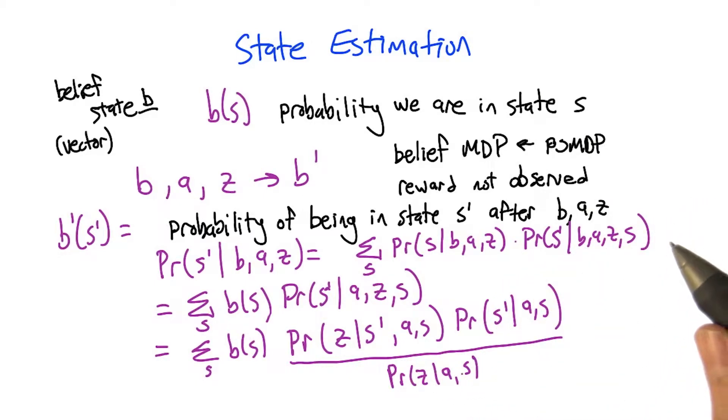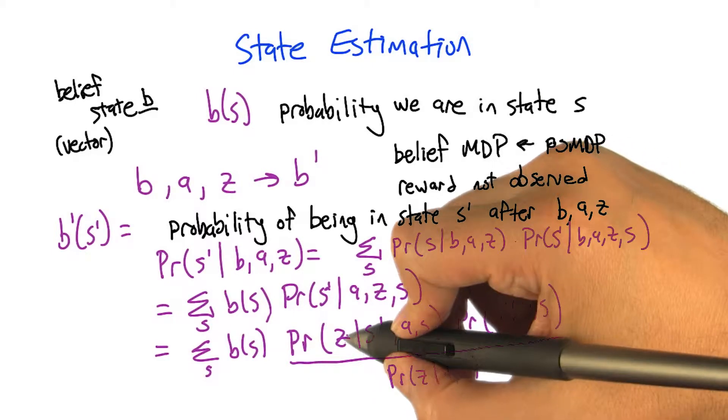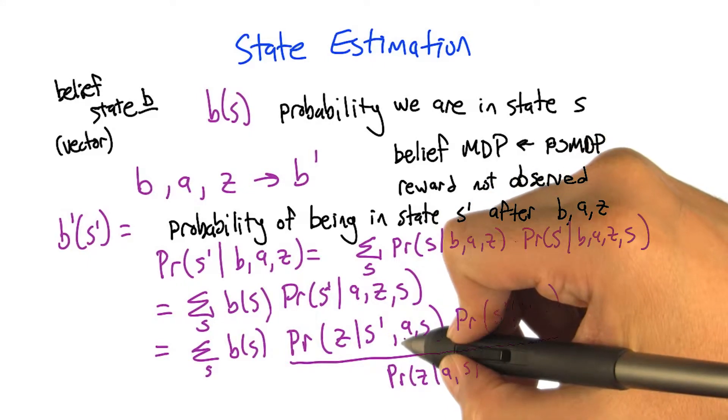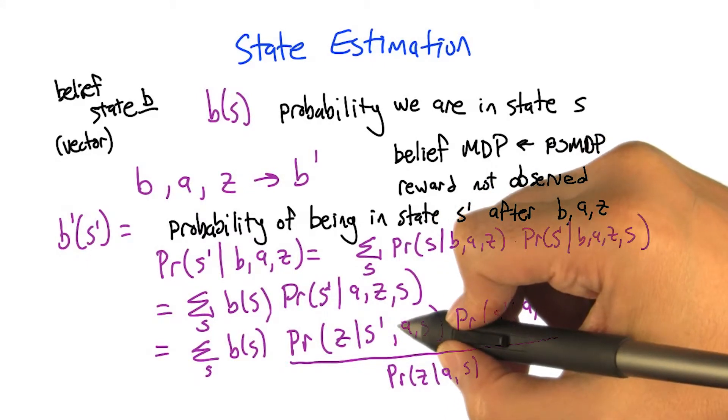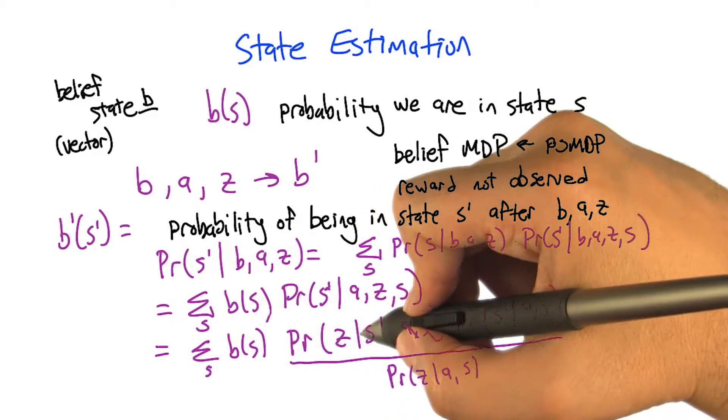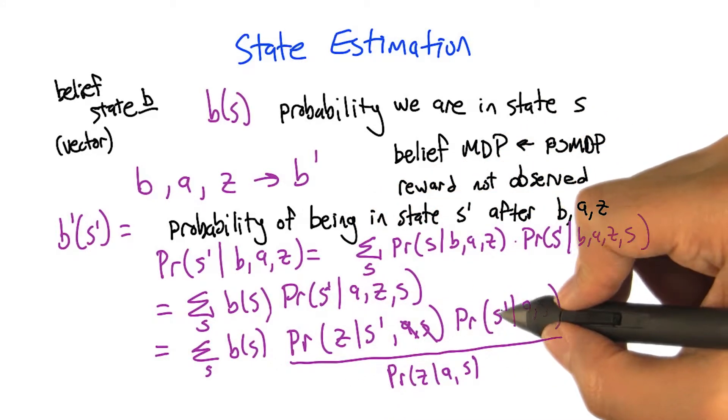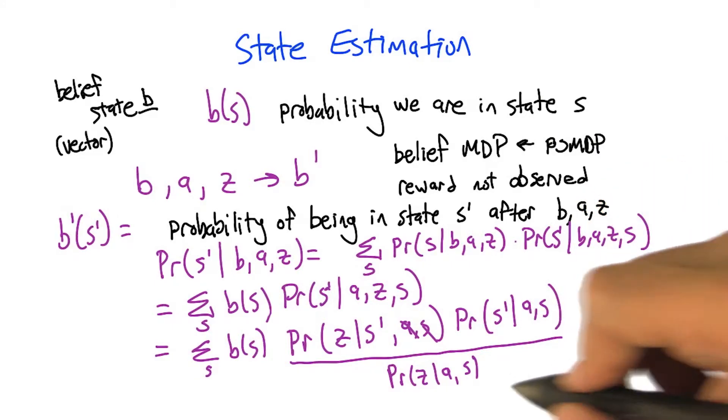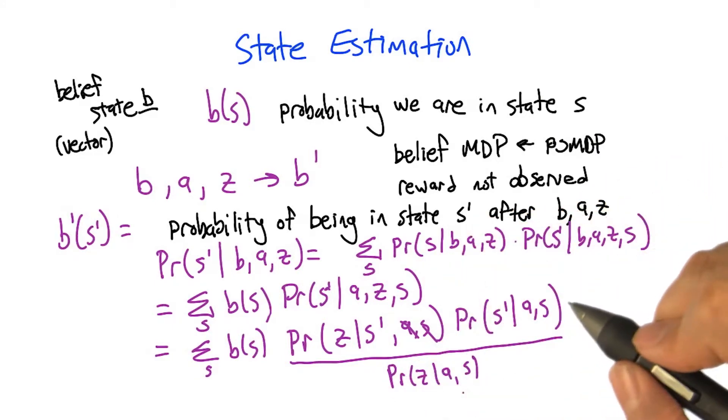So now we're getting really close to quantities that we recognize. In particular, the probability of an observation given the state that we just landed in is independent of the action and the state that we just took. So this is going to be the observation function. This right here is the transition function, the probability of landing in some state S-prime, given that we were in state S and took action A. And then this is just going to be a normalization factor at the bottom.